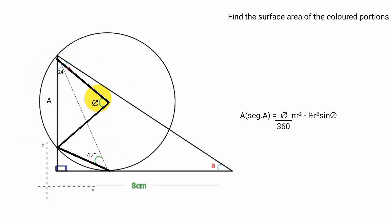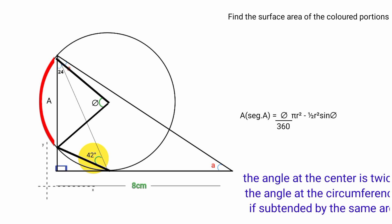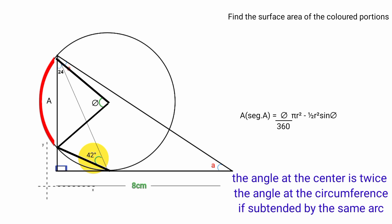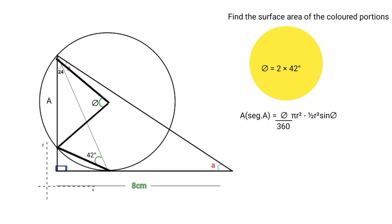This angle theta and this 42 degree angle are subtended from the same arc — one to the center and one to the circumference. In circle theory, the angle at the center is twice the angle at the circumference if subtended by the same arc. Since this is 42 degrees, theta must be 2 times 42 degrees, so theta equals 84 degrees.